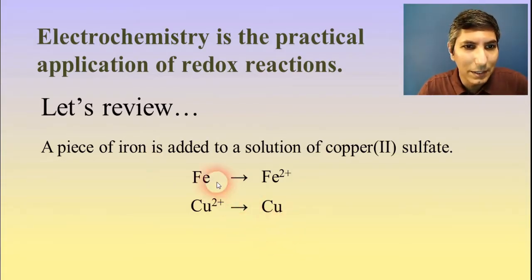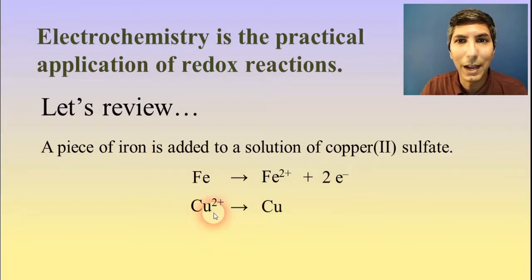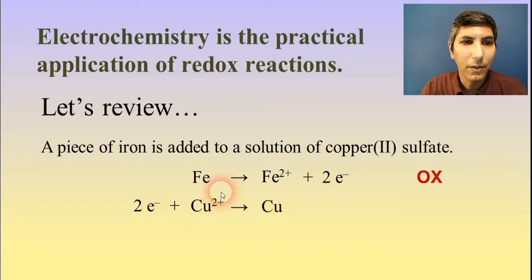Now, we have to balance these. We see that there's a charge of zero on the left on this first half reaction and a plus two over here. So to balance this out, we need two electrons on the right side. And then likewise, to balance out the charge on the second half reaction, we need two electrons on the left side right there.